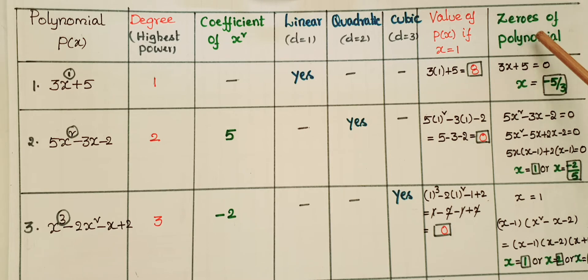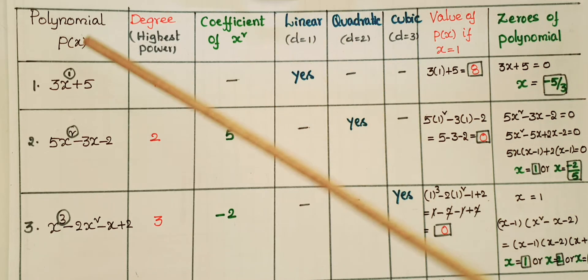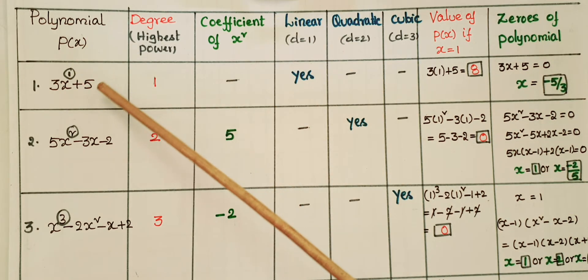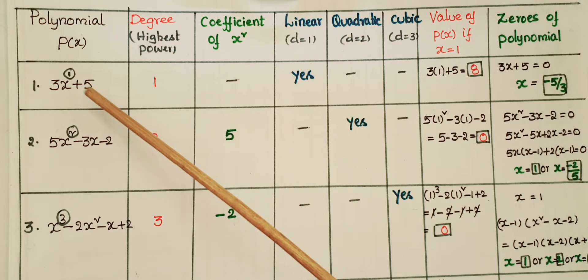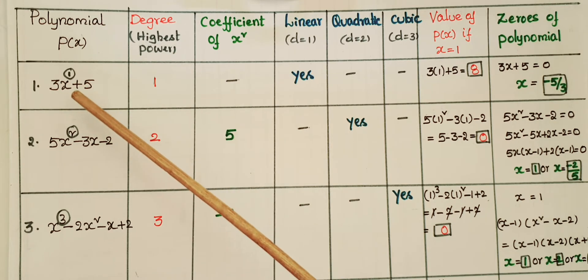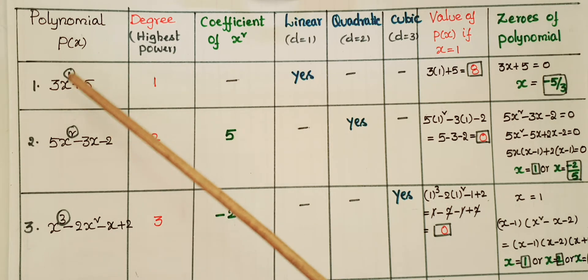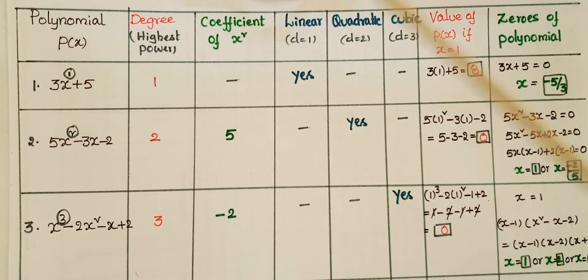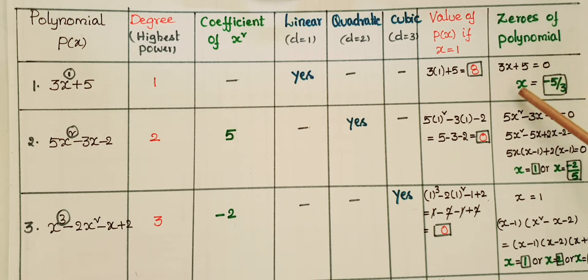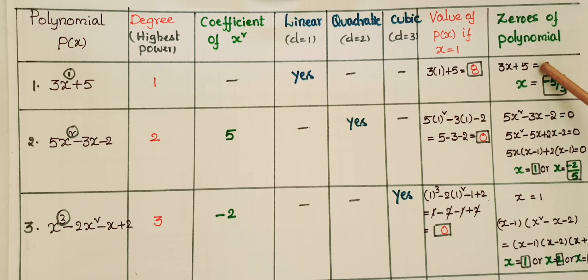For the zeros of the polynomial, if p(x) is equal to 0, the x value is called a zero of this polynomial. So 3x plus 5 equals 0, then x is equal to minus 5 by 3. So this is the zero of this polynomial.